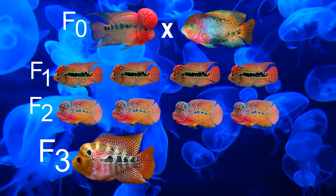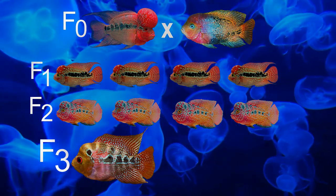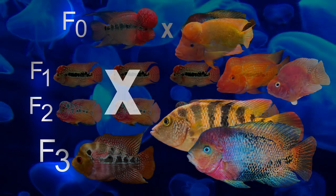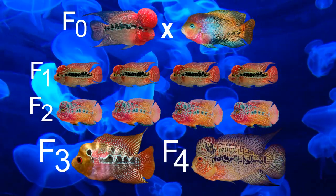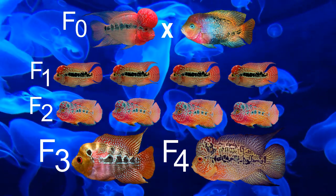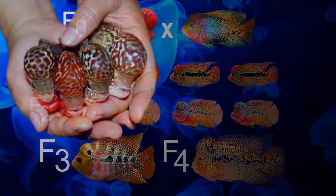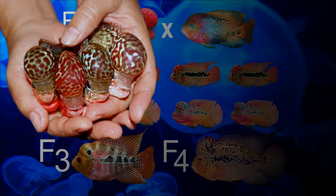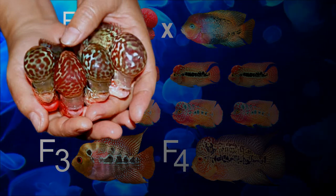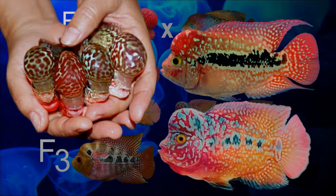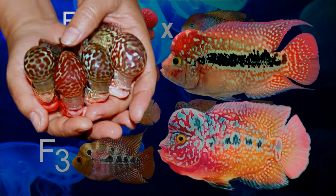Now, about the F4 — anyone from F0 to F3 crossbred with another cichlid class, the results are called F4. And flowerhorns are considered as F4s. Flowerhorn breeders also know the phenotypes of these F generations. An F1 would look like this, and an F2 would look like this, and so on.